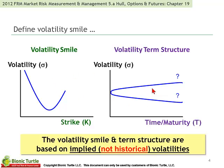We start with the Volatility Smile. The first thing to note is that we're dealing with implied volatility, not historical volatility. The volatility smile is a plot of implied volatility on the y-axis against strike price on the x-axis. Depending on the in or out of moneyness of the option, the Volatility Smile refers to the fact that we observe an implied volatility that is not constant as the moneyness of the option changes.